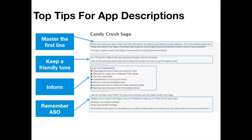You want to make sure you master the first line to make a really good impression. You want to keep a friendly and branded tone so that people feel like they're closely involved with what you're doing, and you want to make sure that you inform people so they know exactly what your app is about. When it comes to Google Play, the big difference is that app store optimisation and SEO plays more of a part within the app store description.